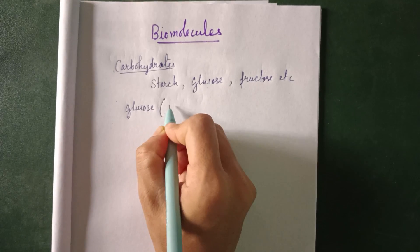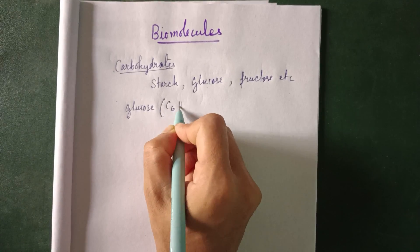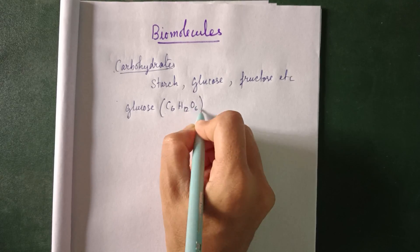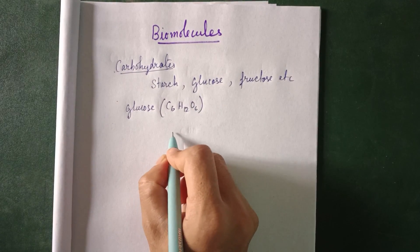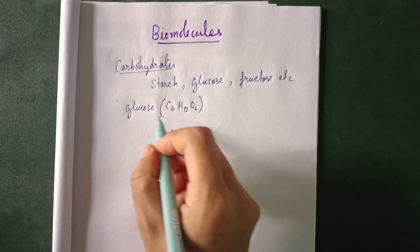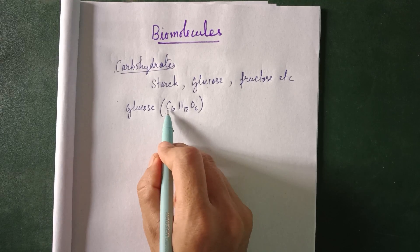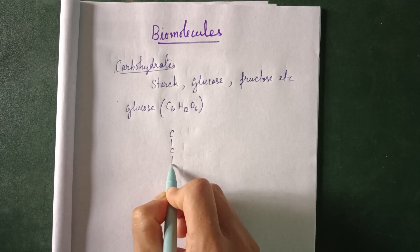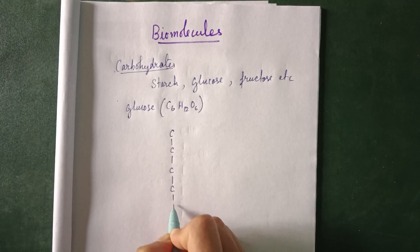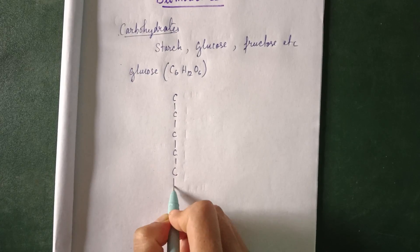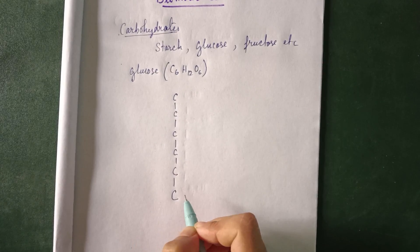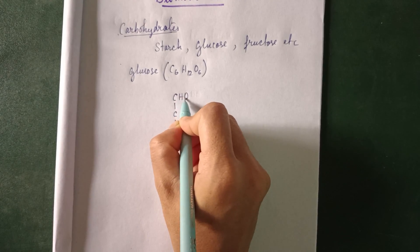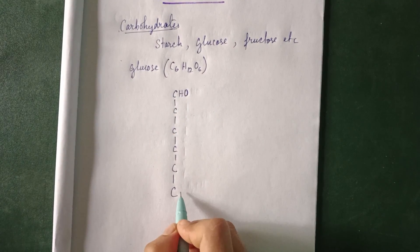Let us start with glucose. The formula — everyone is familiar with it — is C6H12O6. Now let us try to draw the structure in the Fischer projection. How many carbons are there? Six. So just draw directly: one carbon, two, three, four, five, six — we have drawn six carbons.